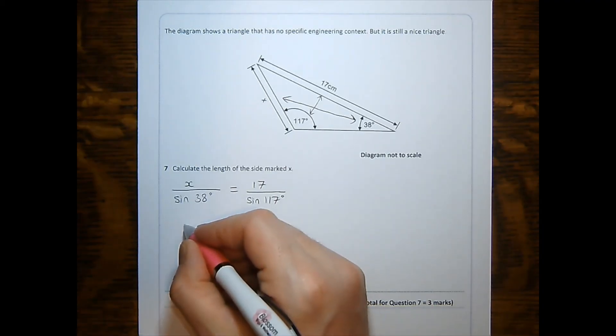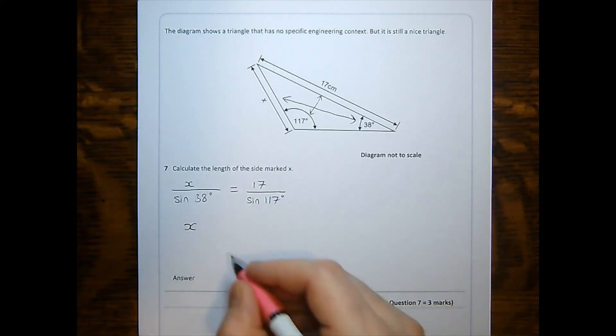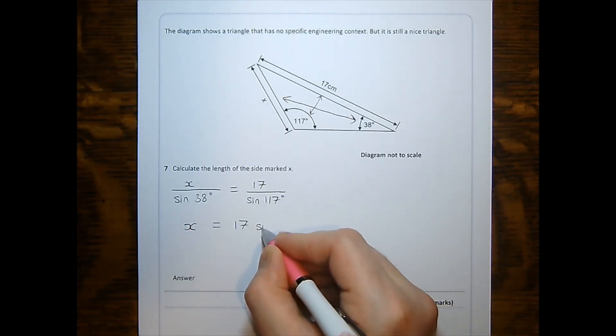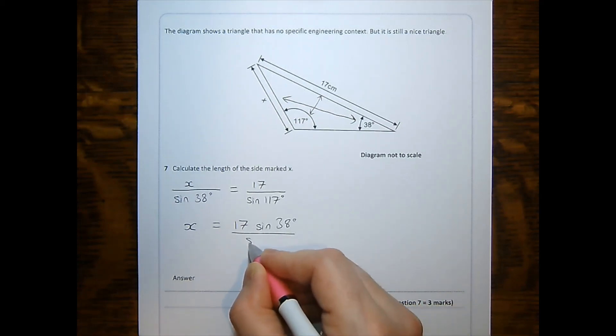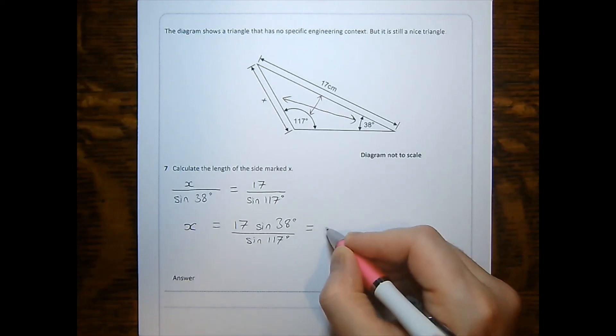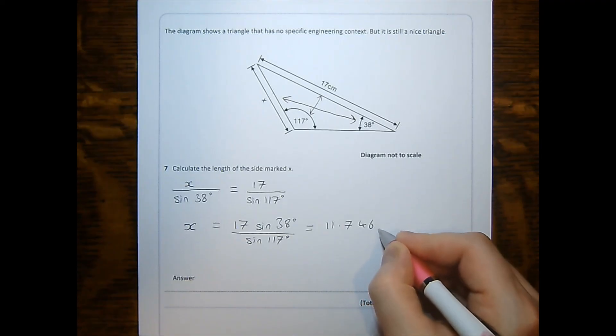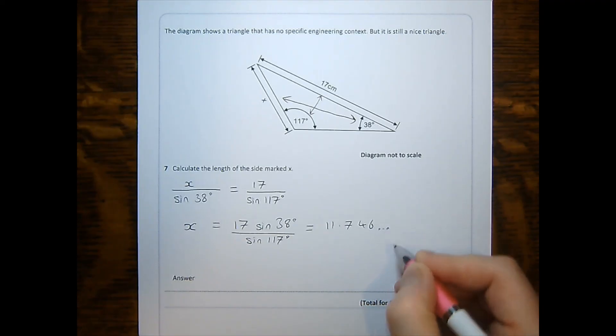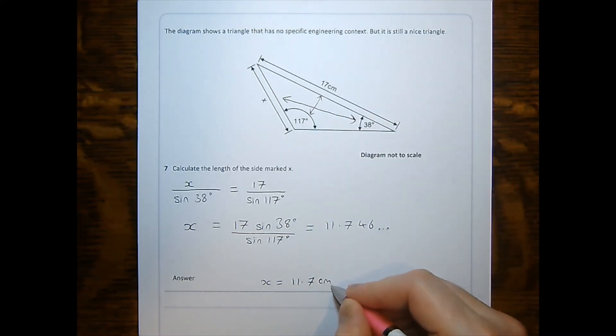The rearrangement is relatively simple. I just bring the sine 38 degrees up to the numerator of the other side, giving me 17 sine 38 degrees all over sine of 117 degrees. Putting that into our calculator gives us 11.746 etc. And this means that x is equal to 11.7, and the units are centimeters, and we have rounded to three significant figures.